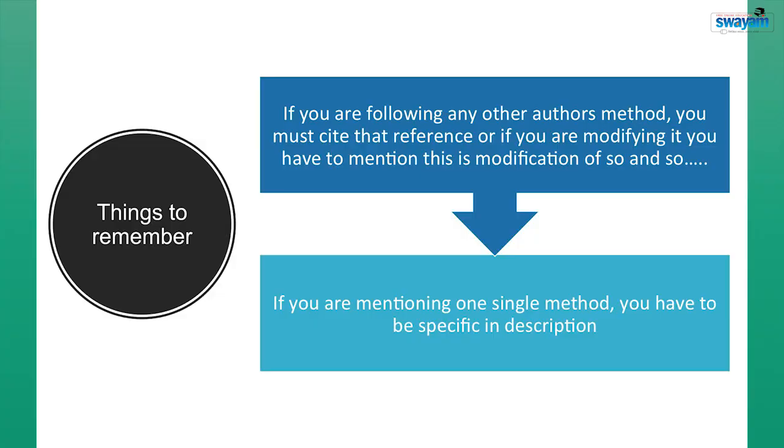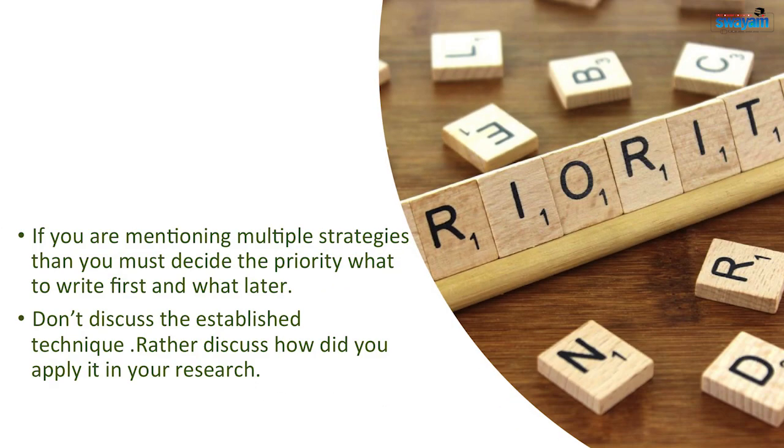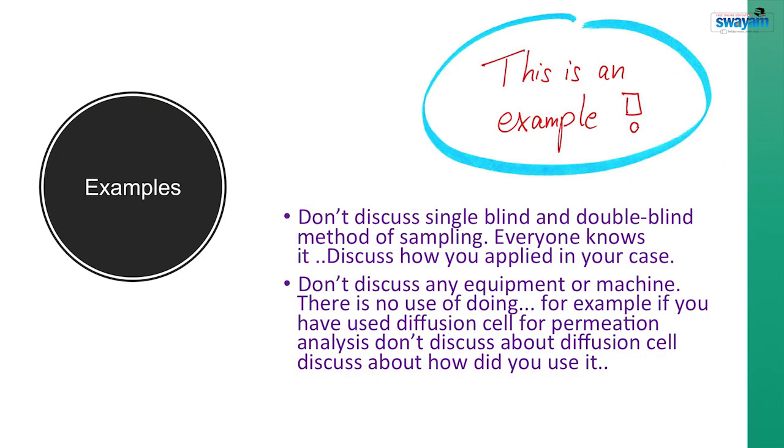What are the things to be kept in mind? If you are following any other author's method, you have to cite that reference, or if you are modifying it, you have to mention this, that this is the modification what you have done. If you are using animal in your study, animal study you are performing, you discuss the protocol and mention about institutional ethical committees approval CPCSEA. If you are mentioning one single method, you must be specific. In case you are using multiple strategy as we have discussed earlier also, then you must prioritize what to write first and what later. Rest of the things we have also discussed in the synopsis part.